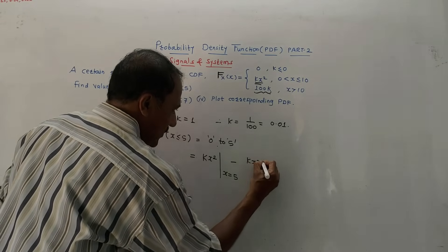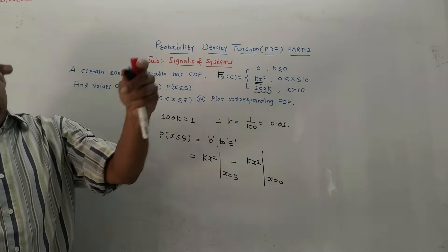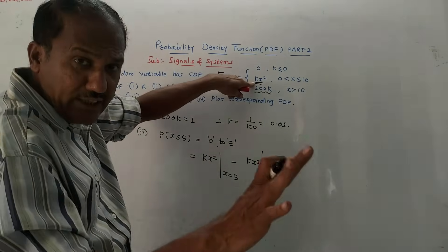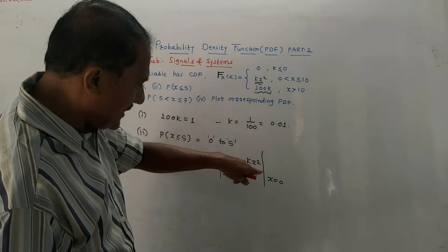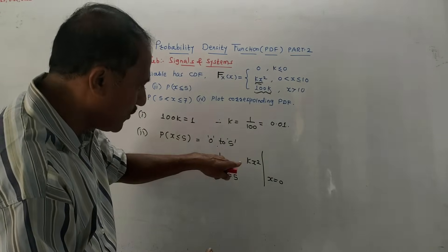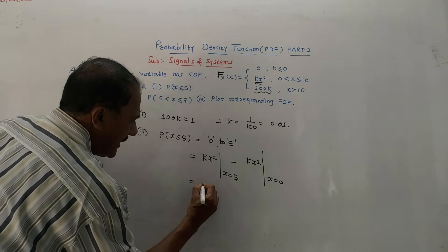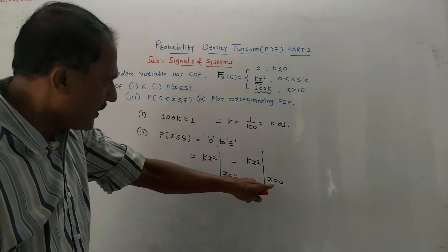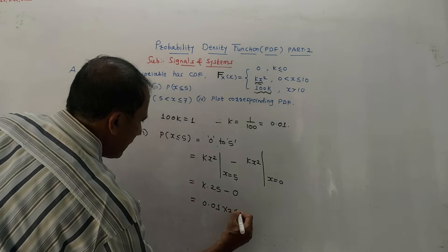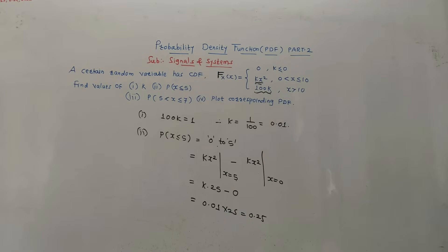Evaluate K·X² at X equals 5, minus K·X² at X equals 0. With K equals 0.01, we get 0.01 into 25, which gives 0.25. So the answer to the second part, probability X less than or equals to 5, is 0.25.